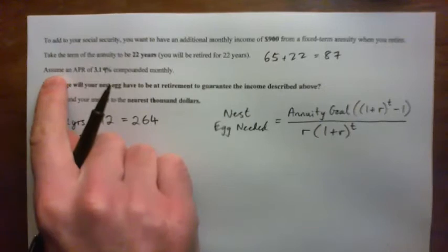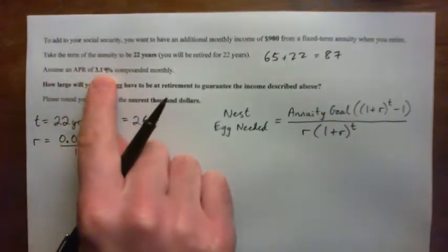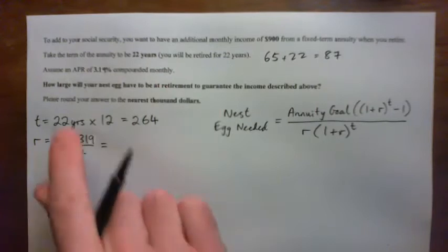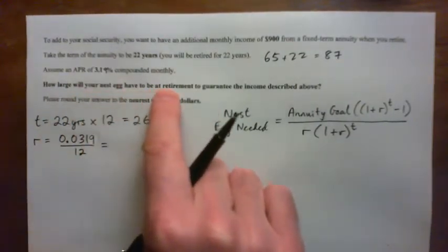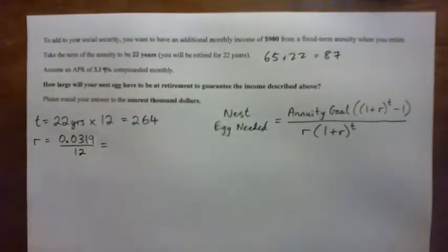So anyway, assume an APR of 3.19% compounded monthly, how large will your nest egg have to be at retirement to guarantee the income described above? And please round your answer to the nearest thousand dollars.